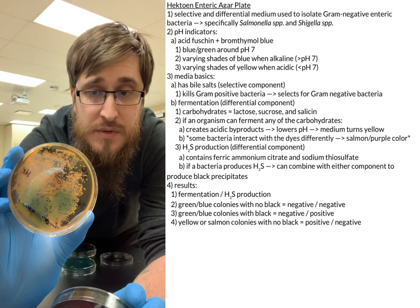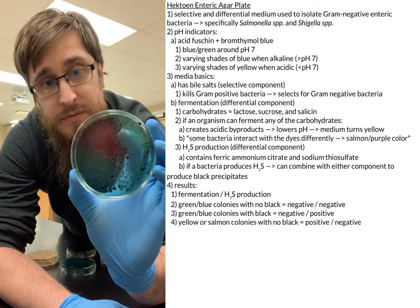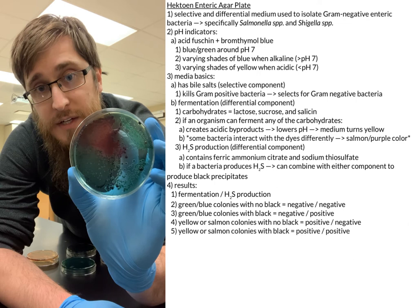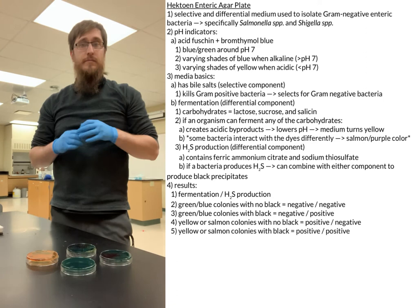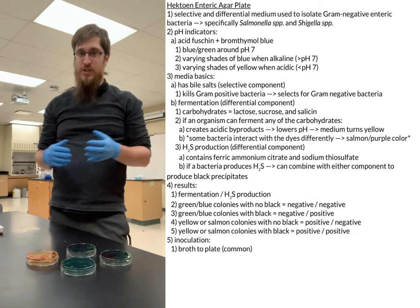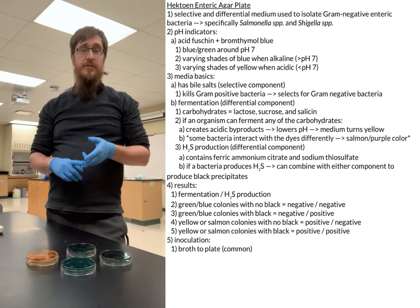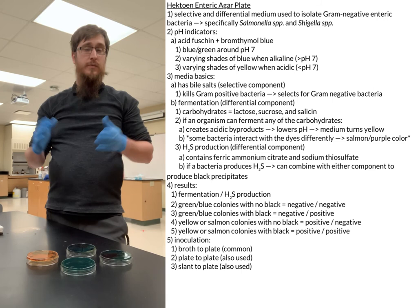If you have salmon-colored or yellow colonies and also some black dots, that would be positive for fermentation and positive for hydrogen sulfide production. In terms of inoculating our plates, we can do a basic broth-to-plate inoculation, which is what we normally do. But if you have your sample on a plate or a slant, you can also do a plate-to-plate or slant-to-plate inoculation. Either will work just fine. That should cover everything we need to know for our HE plate.